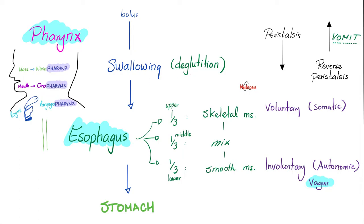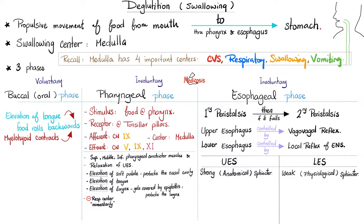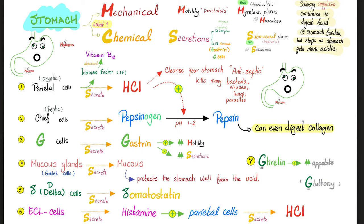Deglutition or swallowing happens in three phases. You have the buccal phase, which is voluntary. The pharyngeal and esophageal phases are involuntary. The center for swallowing is in the medulla, because the medulla has four important vital centers — heart and lungs: get it in, get it out. Where was the center for mastication? In the pons. How about defecation? In the spinal cord. After the esophagus, you go to your stomach. Motility — don't forget the receptive relaxation, thanks to ATP from the vagus nerve.